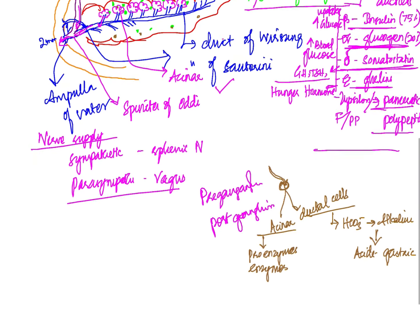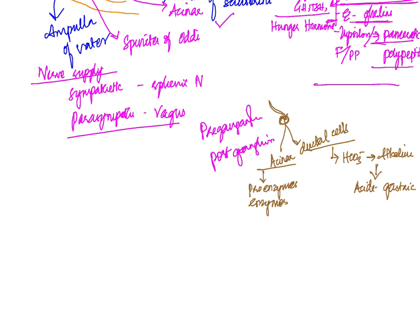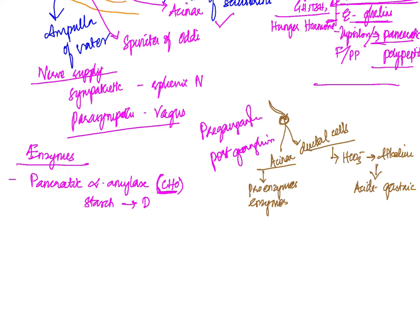Now we will see about the proenzymes and enzymatic secretions from the pancreas. The enzymes secreted include pancreatic alpha amylase, which deals with carbohydrates. This enzyme converts starch into dextrin and then into maltose.